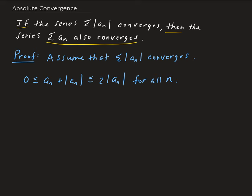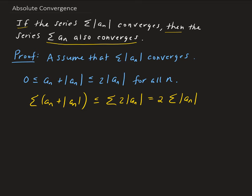From here, we're going to take the summation of both sides. So the summation of the nth term plus the absolute value of the nth term is less than or equal to the summation of two times the absolute value of the nth term, which is the same as two times the summation of the absolute value of the nth term. Two is just a constant here.